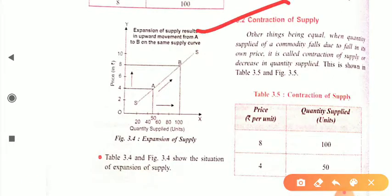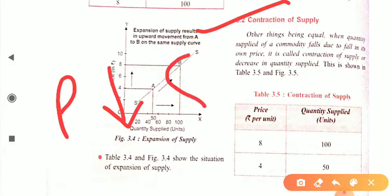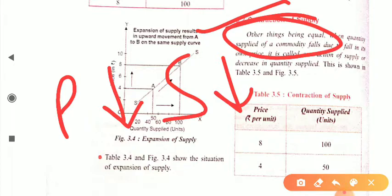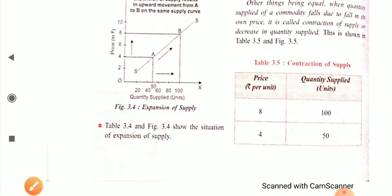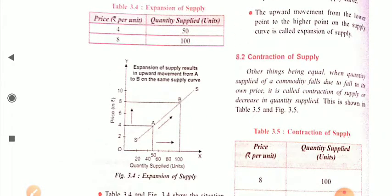Contraction of supply means that other things being equal, when the quantity supplied of a commodity falls due to a fall in its own price, it is called contraction of supply or decrease in quantity supplied. When price decreases, quantity supplied decreases, and all other factors — income, taste, preference, population, and future expectations — remain constant.